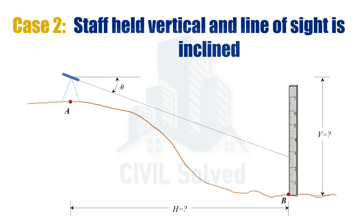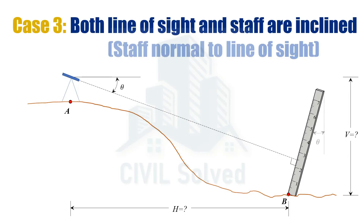...in case number two, the staff was held vertical and the line of sight was inclined. In that case, the line of sight is not perpendicular to the staff. Since the working of tachometry is based upon the case when we have the line of sight perpendicular to the staff, and in case two it was not, we therefore considered an imaginary staff, calculated the imaginary staff intercept, and then some complex calculations were required.